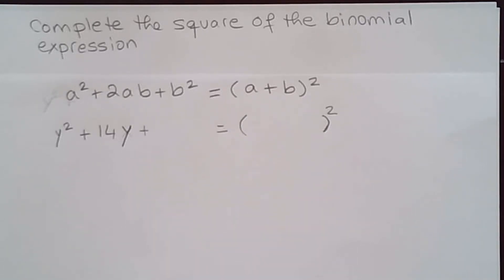Complete the square of the binomial expression. I want to remind you that a² + 2ab + b² is equal to (a + b)². So this is something that we've seen in class. You may want to expand it and you're gonna get this. So to complete the square I need to have a trinomial that has this form.